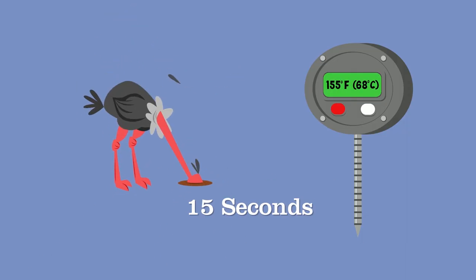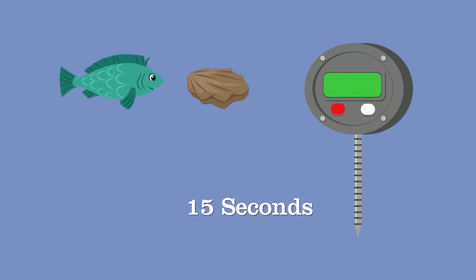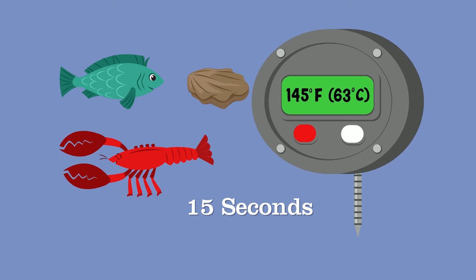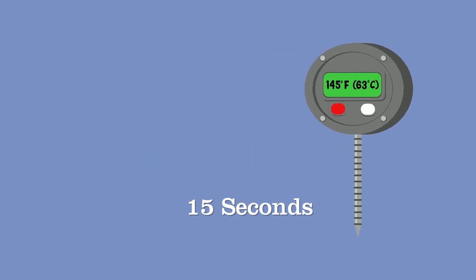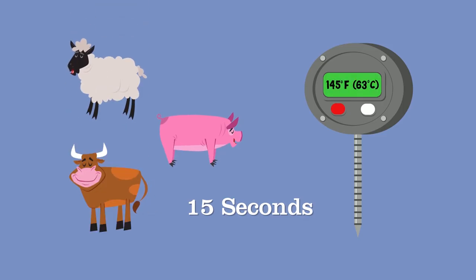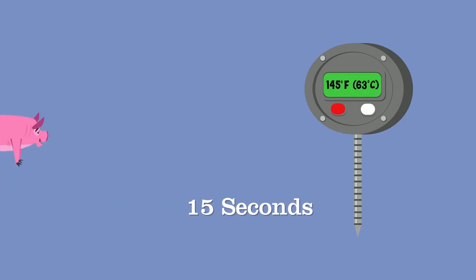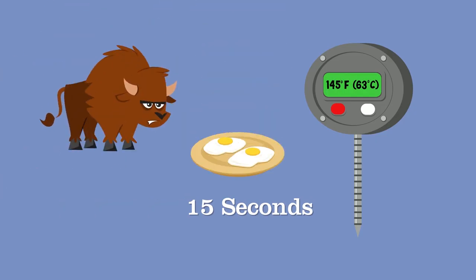Moving on, seafood including fish, shellfish, and crustaceans has to be cooked to 145 degrees Fahrenheit (63 degrees Celsius) for 15 seconds. And the same goes for steaks or chops of pork, beef, veal, and lamb. 145 degrees Fahrenheit (63 degrees Celsius) for 15 seconds is also the cooking temperature for shell eggs that will be served immediately and for commercially raised game.